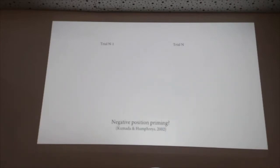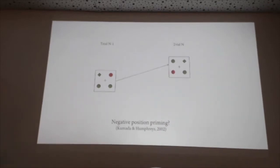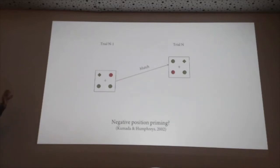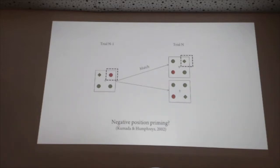To address this, we look at sequence effects, starting with the idea of negative position priming. Imagine on the previous trial (trial N-1) there's a salient distractor present, and then on the current trial there's a target at that same location — we call that a match trial. Alternatively, you could have a non-match trial where a salient distractor was at a location, but now at that location there's just one of the other non-targets.